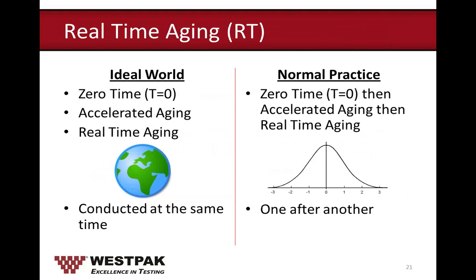According to ISO 11607, accelerated aging and real-time aging should begin at the same time. However, this isn't normal practice. In an ideal world, zero-time testing — conditioning and package performance — would start simultaneously with accelerated aging and real-time aging, using the same batch of samples. However, most customers don't do this. They ship zero-time samples for testing first to make sure they pass before spending time and money building more samples for aging.